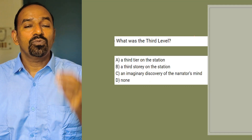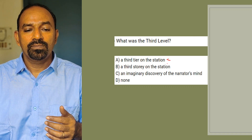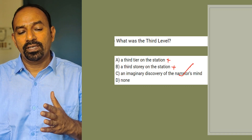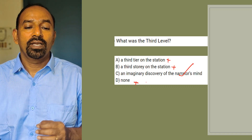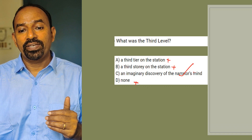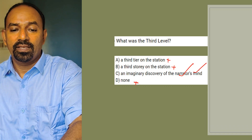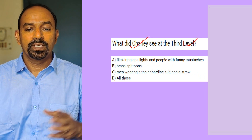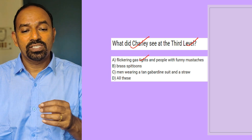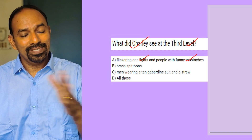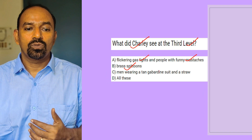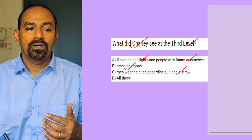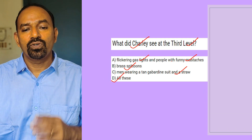Next question: What was the third level? Options: a third tier on the station; a third story on the station; an imaginary discovery of the narrator's mind. The third level is an imaginary discovery of the narrator's mind. Next question: What did Charlie see at the third level? He saw flickering gas lights, people with funny moustaches, brass spittoons, and men wearing tan gabardine suits and straw hats. So all these is the right option.